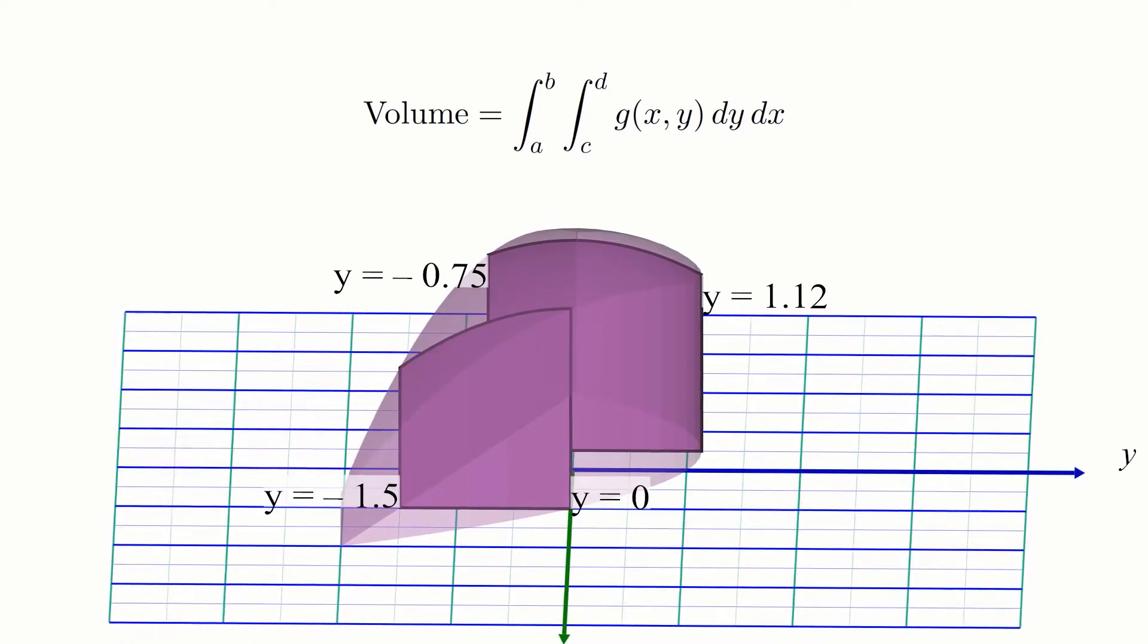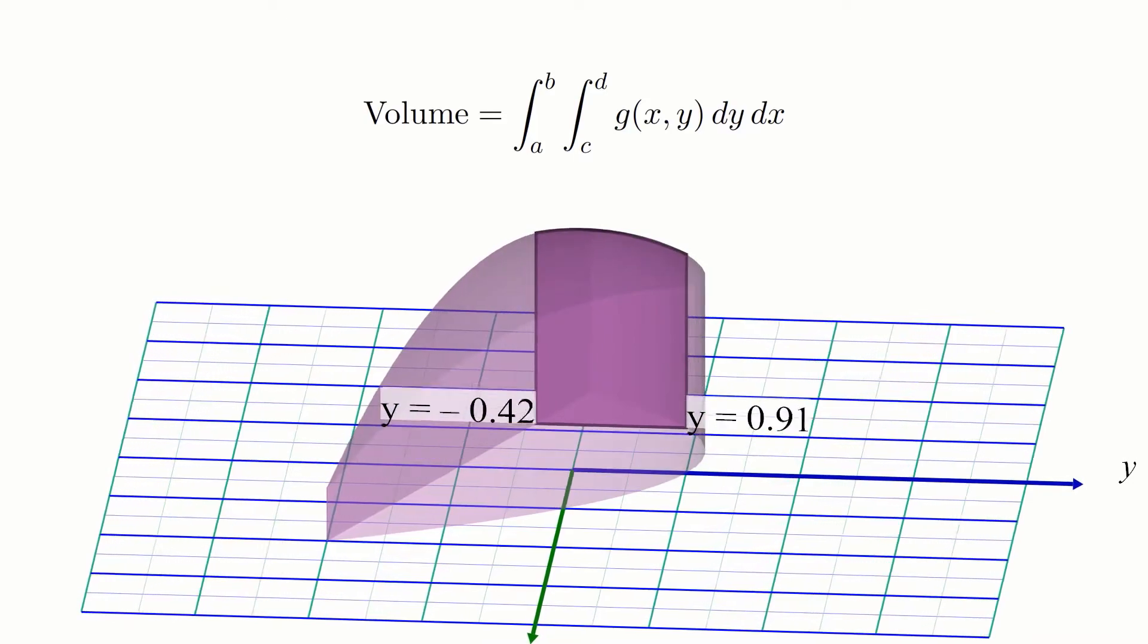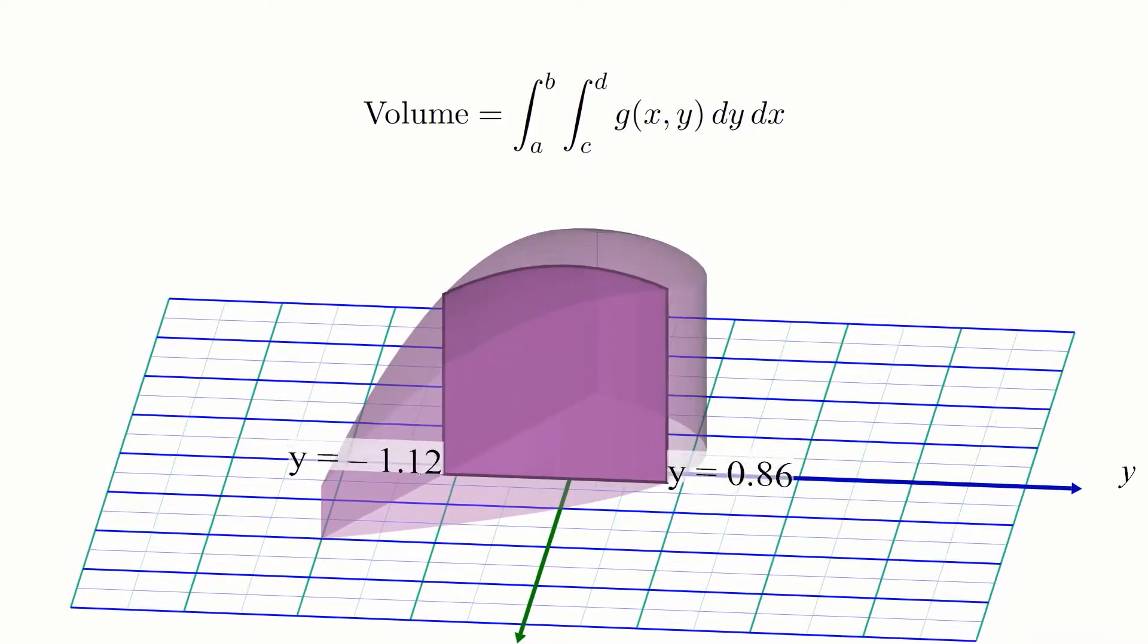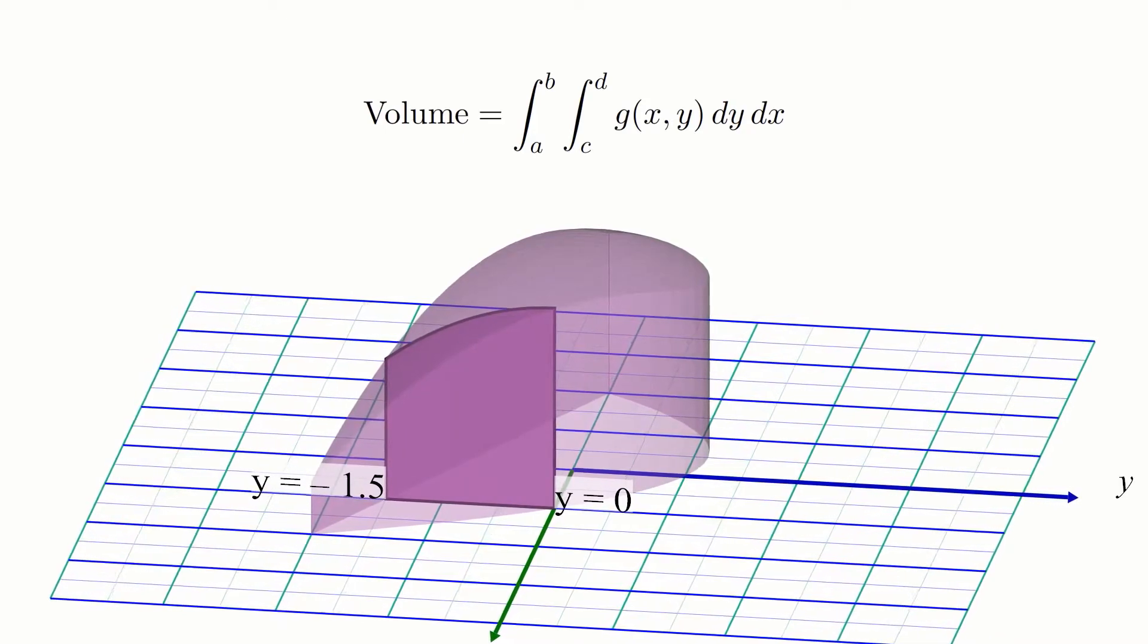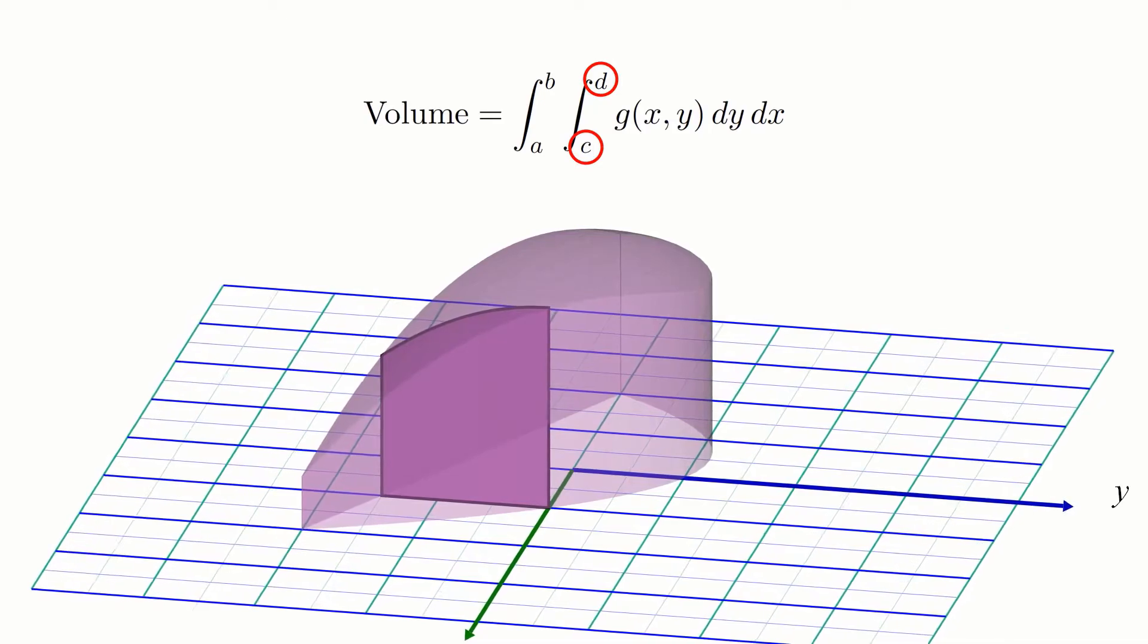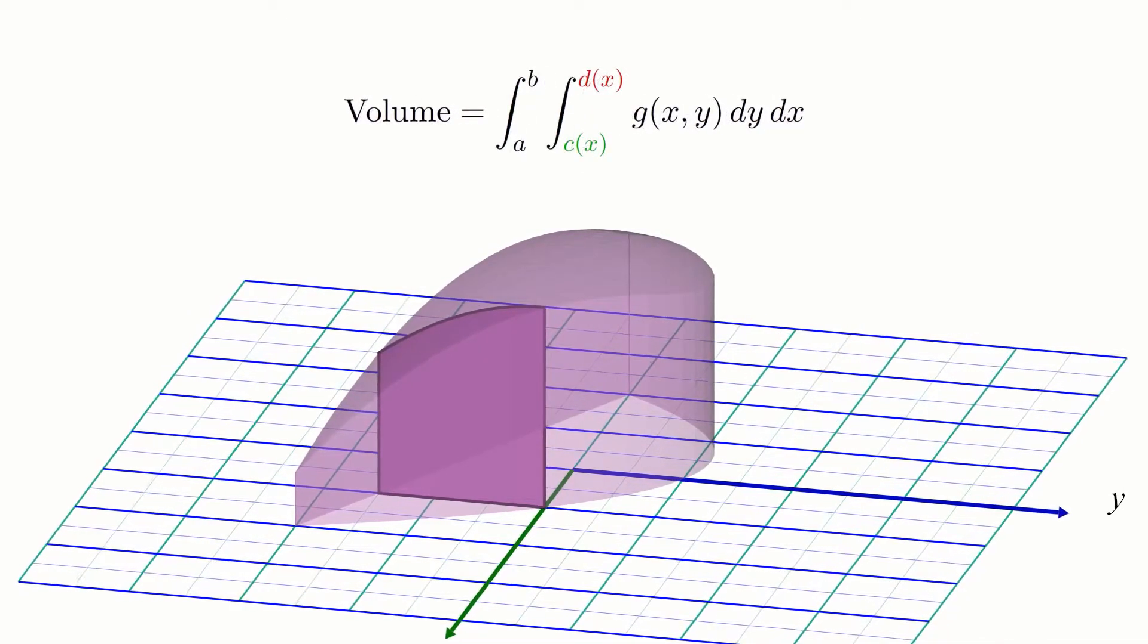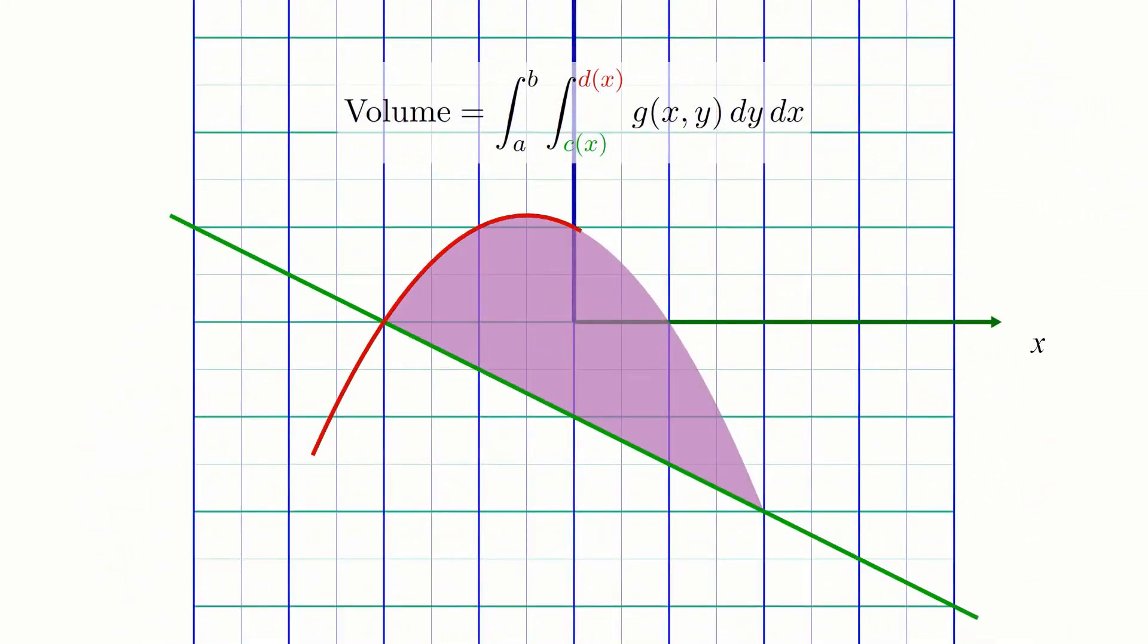What this means is that the bounds of our inner integral will themselves be functions of the outer variable, in this case x, since the width of each slice depends on its x location. So instead of having two constants, c and d, as the bounds of our inner integral, we'll have two functions of x. And these functions come from the equations that describe the bounding curves, the line segment and the parabola.